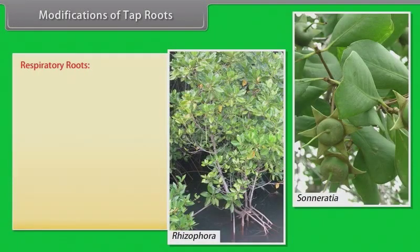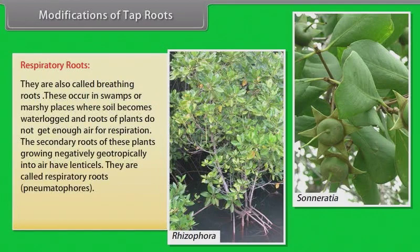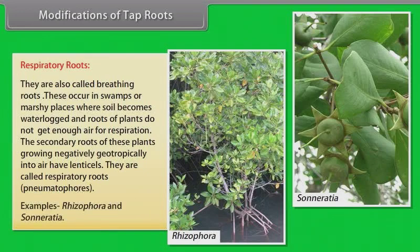Respiratory roots: Also called breathing roots. These occur in swampy or marshy places where soil becomes waterlogged and roots of plants do not get enough air for respiration. The secondary roots of these plants grow negatively geotropically into the air and have lenticels. They are called respiratory roots or pneumatophores. Examples: Rhizophora and Sonneratia.